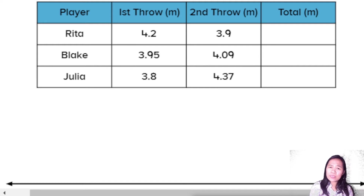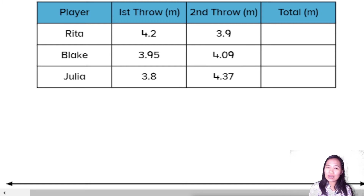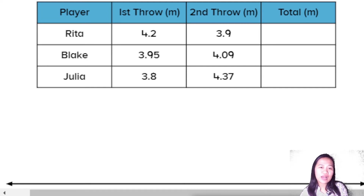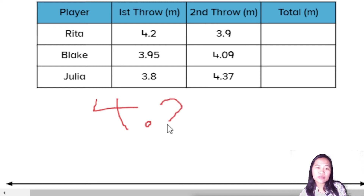We want to know: what is the total distance that Rita controlled for the two rounds? Rita threw 4.2 meters and 3.9 meters. What do you think the total is? We can add 4.2 and 3.9 meters to get the total.